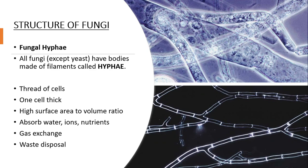First of all, we talk about fungal hyphae. These are thread-like chains of cells — filaments which are called hyphae. These are threads of cells which are one cell thick and they have a high surface area to volume ratio.